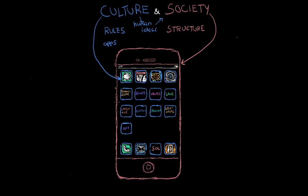The apps are what make the phone run. The big takeaway is that society is just organized groups of people, and culture is their way of life. These two are not the same thing, but they cannot exist without each other. Just as a phone cannot function without apps, society cannot function without its culture.